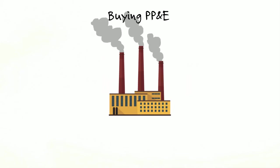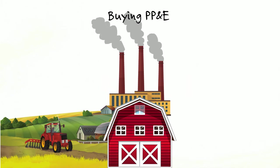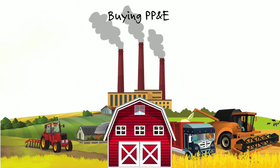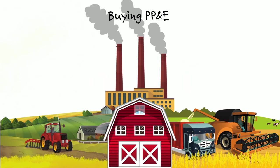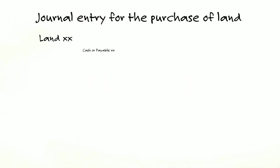When you buy PP&E, don't just settle on the purchase price. If it's land, look for things like title and recording fees, attorney's fees. Maybe you have to remove an old building — that's part of the cost of the land. Clearing the land, picking up any delinquent taxes — that's all cost of the land. The cost of the building starts when you begin excavating. Your journal entry for land: debit land, credit cash or payable. And buying land is an investing outflow.